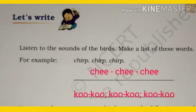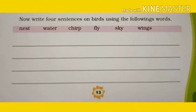Once again: chirp chirp chirp, chi chi chi, cuckoo cuckoo cuckoo. Now write four sentences on birds using the following words: nest, water, chirp, fly, sky, wings.